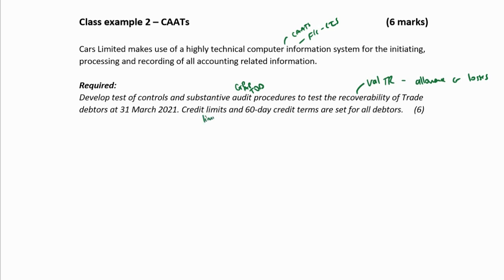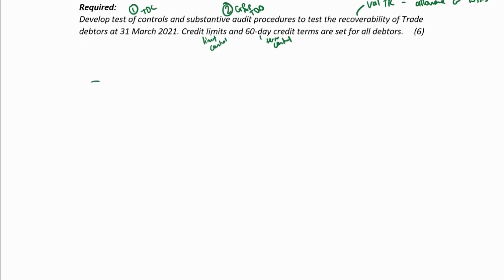Here you've got a limit control and a term control for all debtors. I need to develop tests of controls, so some audit procedures will be tests of controls and others will be substantive procedures. I know I can use CATS, so for the tests of controls the easy ones are: identify the controls and test them. I've got two controls — a limit control — and I can use CATS to test the limit control.